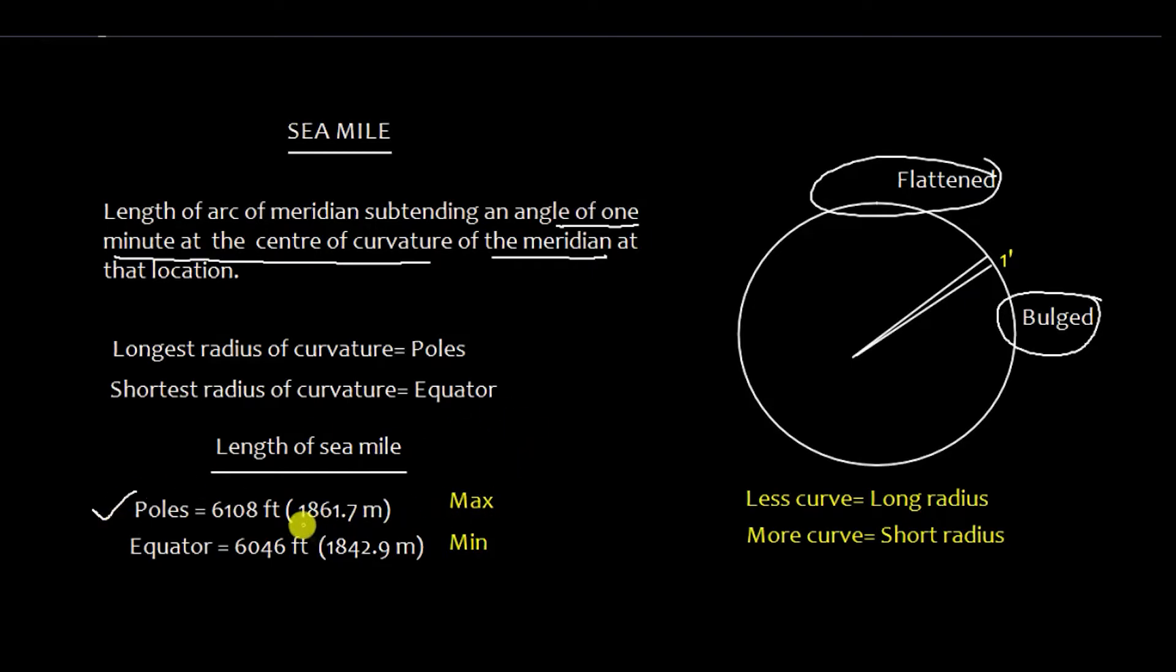At the pole it is maximum here 1861.7 meter and at the equator it is 1842.9. That is the minimum value.